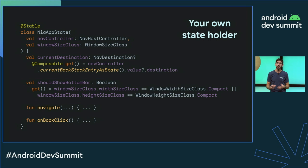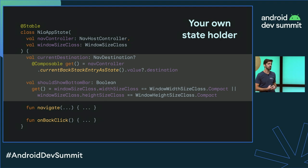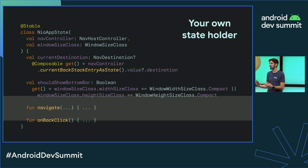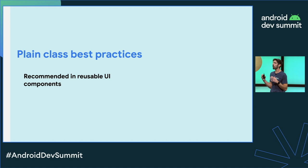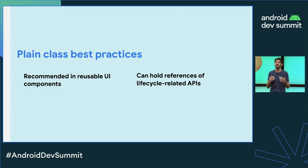Here we are looking at NowInAndroidAppState, the state holder for the NowInAndroid app composable function. It exposes state relevant to the UI — like the current destination and whether or not to show the bottom bar — and handles UI logic like navigating or handling back click events. Plain class state holders are recommended in reusable UI components so that you can hoist out the internal state if needed. They can hold references to lifecycle-related APIs since they are scoped to the UI and follow its lifecycle.